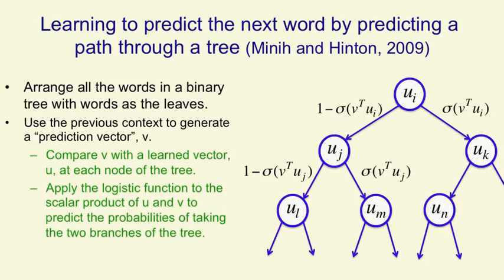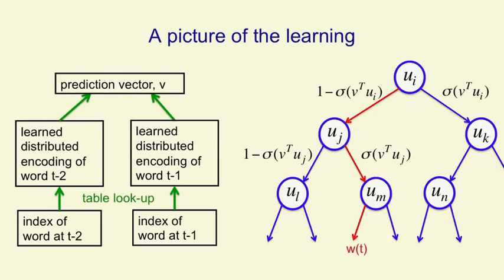When we're learning, we use our context to get a prediction vector. We use quite a simple neural network for this work, where we take the feature vector for each word, and those feature vectors directly contribute evidence in favor of a prediction vector. We simply add up the evidence contributed by those feature vectors, and that gives us the prediction vector. That prediction vector then gets compared with the vectors that have been learned for all the nodes in the tree on the path to the correct next word. So that will be nodes i, j, and m in this tree. That red path shows you the path to the word that actually occurred next, and those are the only nodes we need to consider during learning.